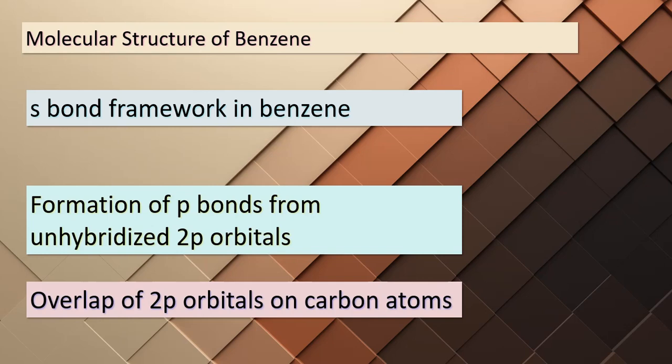Today we're delving into the captivating world of molecular structures, specifically focusing on benzene, represented by the chemical formula C₆H₆. As shown in figure 9.25, benzene's molecular arrangement is truly intriguing. In panel A, we have the sigma bond framework, representing the sigma bonds formed between the carbon atoms in benzene. In panel B, we move on to the formation of pi bonds. These pi bonds originate from the unhybridized 2p orbitals on the six carbon atoms. When these orbitals overlap, they give rise to the double bonds observed between the carbon atoms, contributing to the unique stability and structure of benzene.